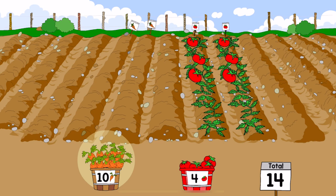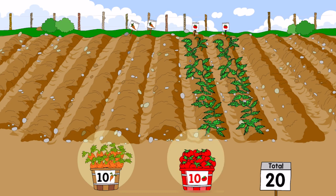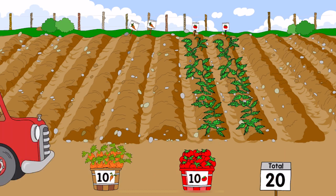Four tomatoes. Five tomatoes, six tomatoes, seven tomatoes, eight tomatoes, nine tomatoes. Ten tomatoes. Ten plus ten equals twenty. Ten.